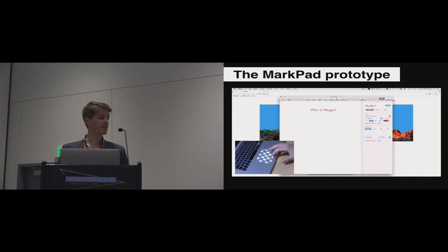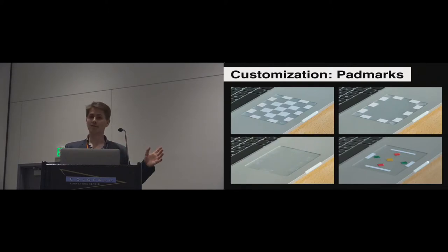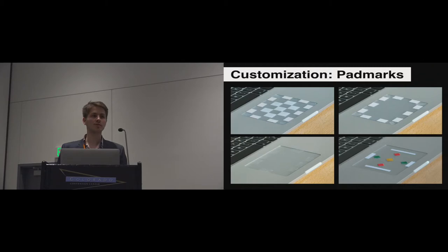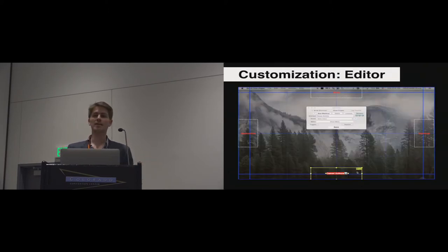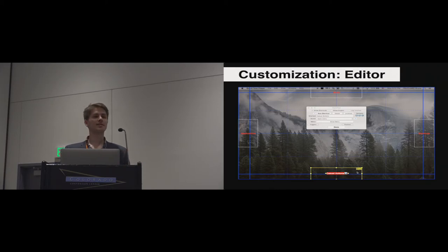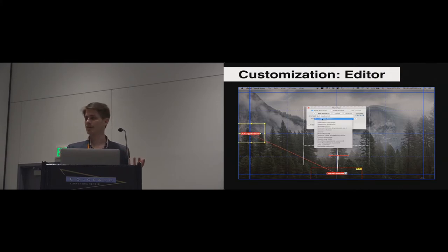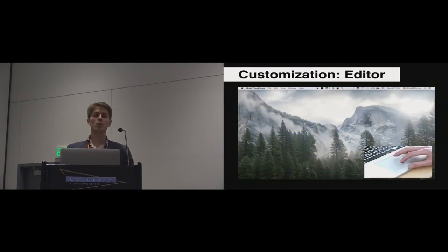The main feature of this prototype is its customization. Users can customize the pad marks on a touchpad using different materials. What we use for the experiments is really cheap: just plastic sheets, paper, or even tape at the bottom left, which is almost invisible on the touchpad. Users could even use colors to help them memorize the strokes and the commands. They can also customize the strokes and the actions to perform. In the editor of the Markpad prototype, you can see four starting areas — four gestural menus. If the user wants to create a new stroke, he just drags and drops from the starting area to where he wants to finish the stroke, then defines the action to be triggered — for example, quit the current application — and then the stroke can be performed as defined.